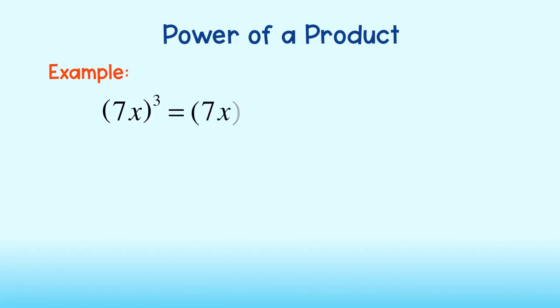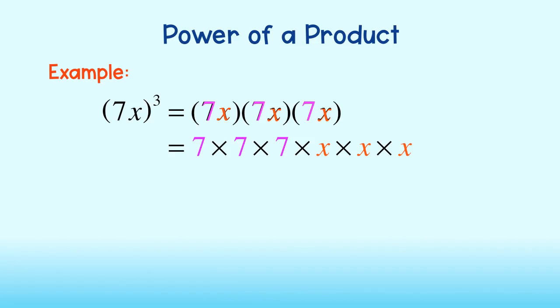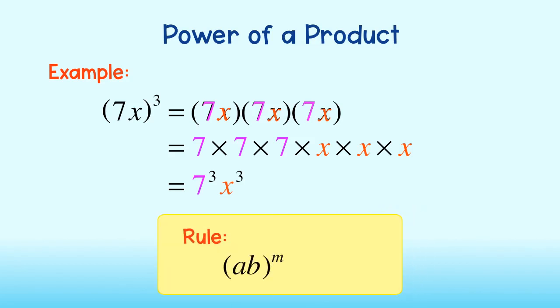The next rule is the power of a product rule. This rule applies when you are multiplying two or more numbers or variables together and then raising the entire product to a power. This is the same as multiplying the product three times. You will see that there are three sevens and three x's. Using the commutative property, we can write this as 7 times 7 times 7 times x times x times x, which is the same as 7 to the third times x to the third. Notice the exponent was just applied to both the seven and the x. When raising a product of numbers to a power, we can simply distribute the exponent to each number in the problem.